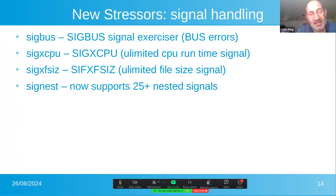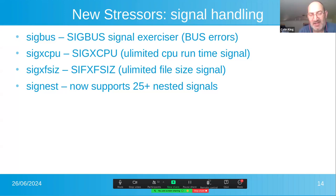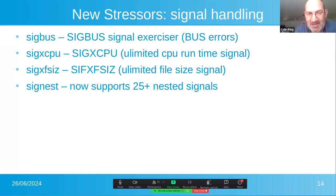The latest version of StressNG now has a full set of signal handling. The final three I had to add in the last couple of years were SIG bus handling, XCPU, and XFS size signals — simple stressors that set up use cases to trigger these signals, catch them, and verify they're working correctly. For the SIG nest stressor, I now have 25 nested signals handled at random, ensuring we can handle lots of signals being triggered inside signals and nested without falling off the end of the stack.